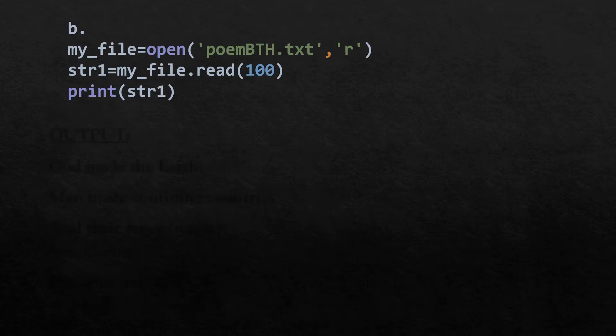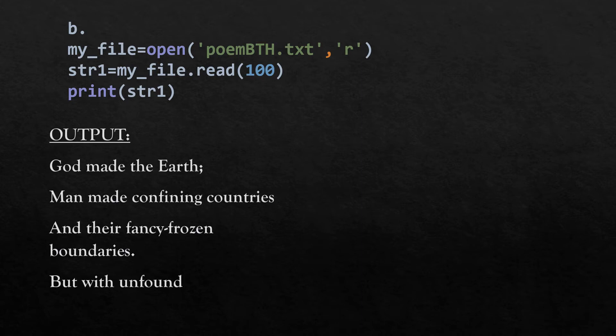In the second code fragment, the same file is opened in read mode and within the read method we have passed 100 as an argument. That means it will read only 100 characters from the file, stored in a variable called str1. When we print str1, it will contain only the first hundred characters of the file.